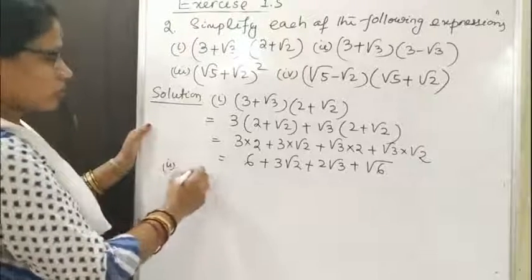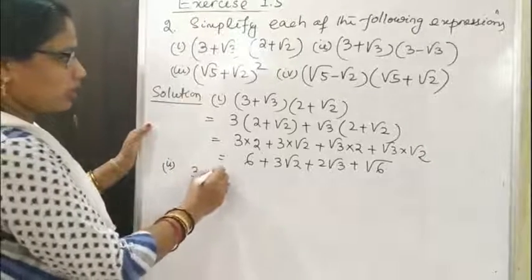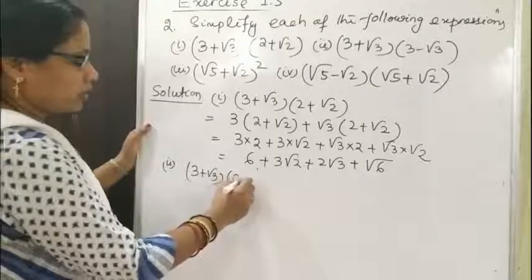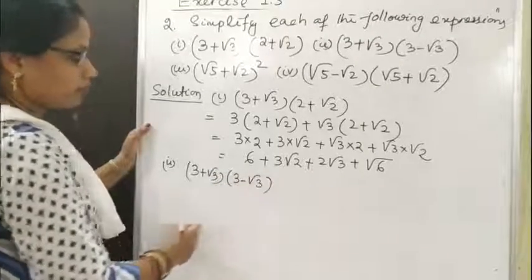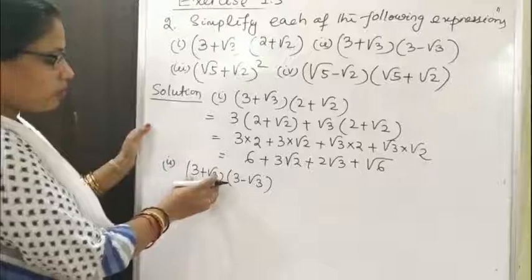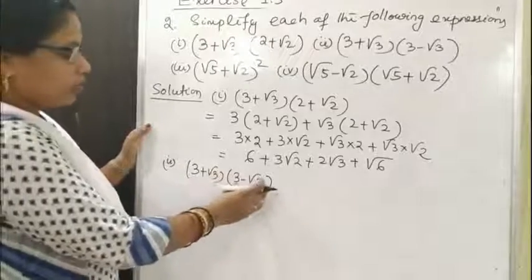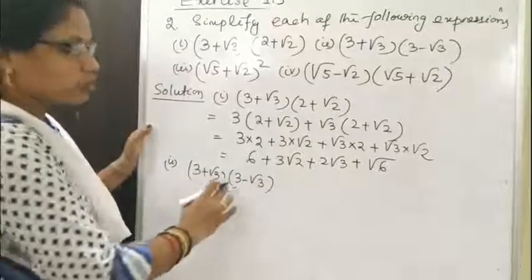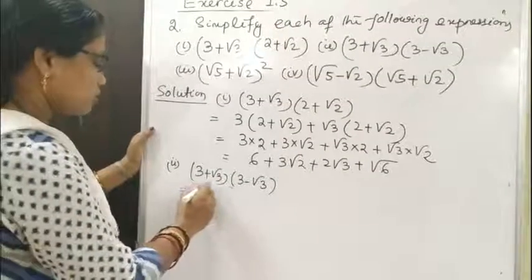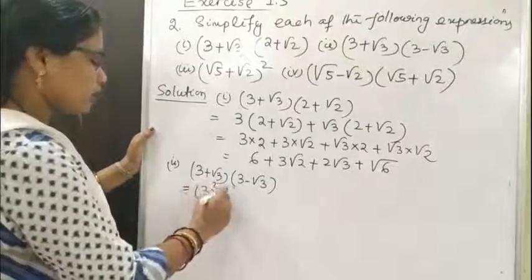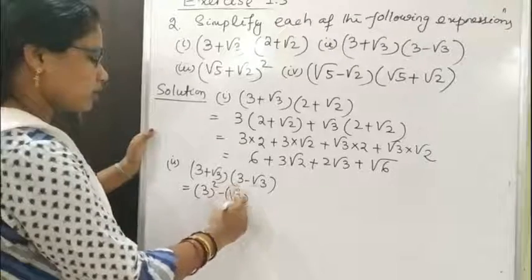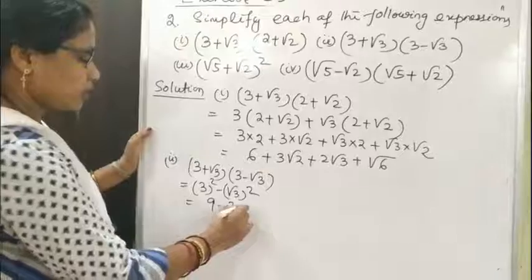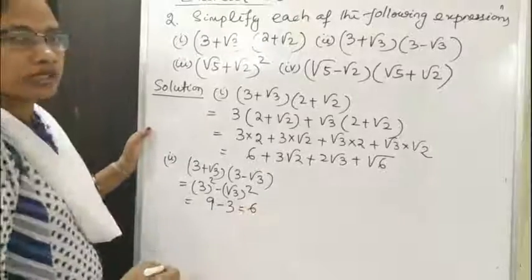Question 2, Bit 2: (3 + √3)(3 − √3). This is in the form of (A + B)(A − B), so we apply the identity A² − B². This equals 3² − (√3)² = 9 − 3 = 6.